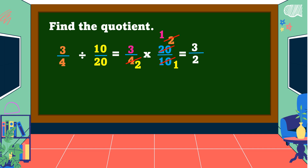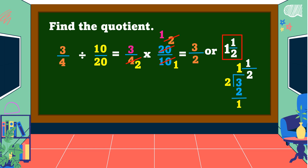Our answer is 3 halves. What kind of fraction is 3 halves? It is an improper fraction. How do we reduce an improper fraction to its lowest term? We're going to make it a mixed number. So we divide the numerator by the denominator: 3 divided by 2 is equal to 1. 1 times 2 is equal to 2. 3 minus 2 is equal to 1. The remainder 1 becomes our numerator and 2, our divisor, becomes our denominator. So 3 halves equals 1 and 1 half. This is our final answer.